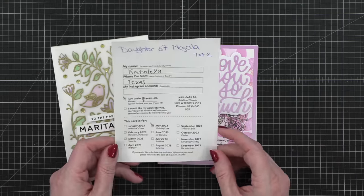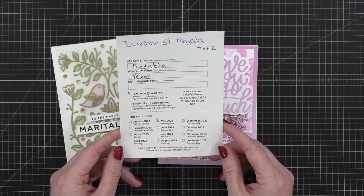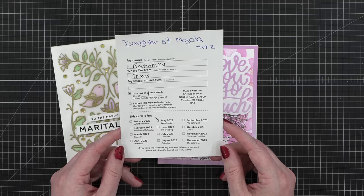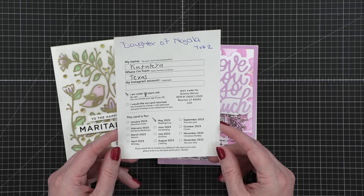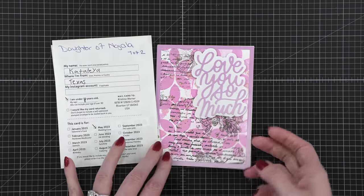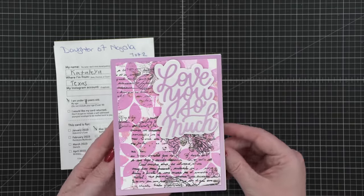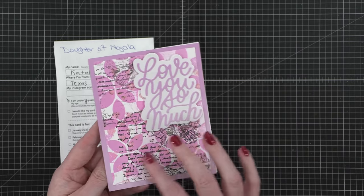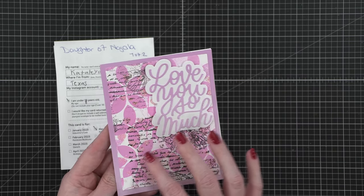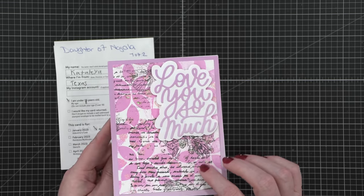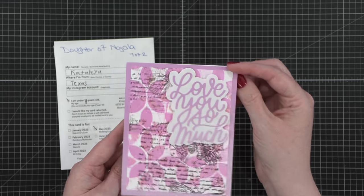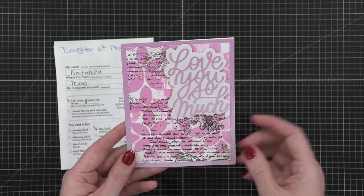These next two cards are from a mother and daughter duo. So this is from Katalaya. I'm guessing how to say your name. She's eight years old and from Texas, but look at this fun card. She's done a die cut greeting up here. Looks like some, is it embossed? Maybe just regular stamped over another stamping, some layered stamping. Such a fun way to layer all those different things. And the colors are really great for this.